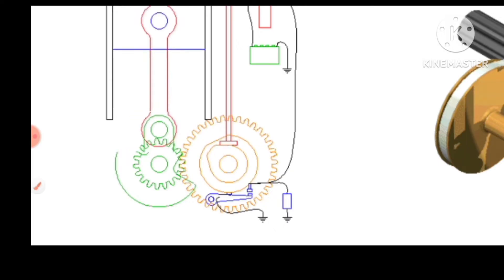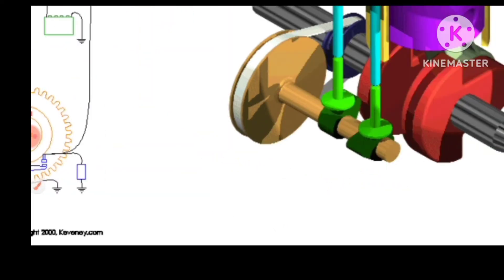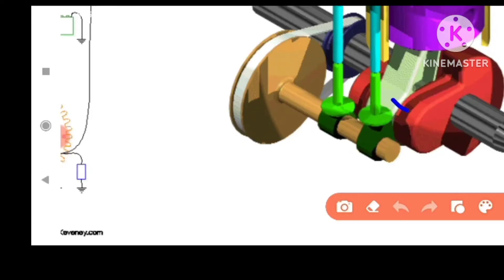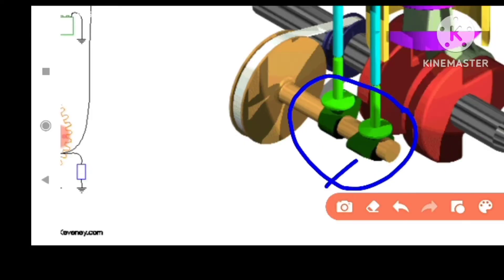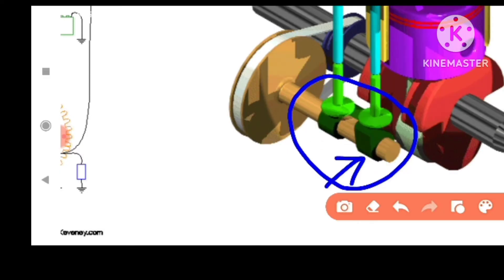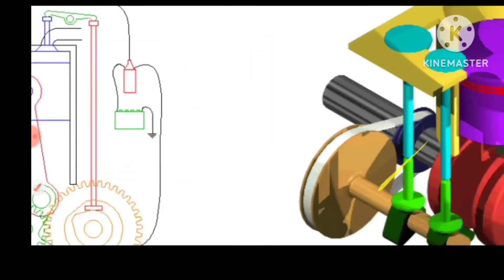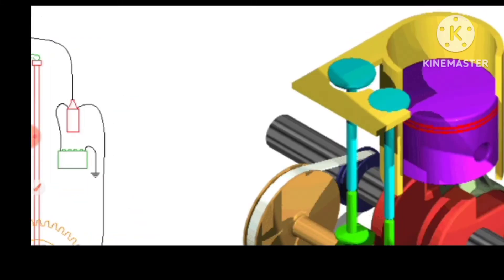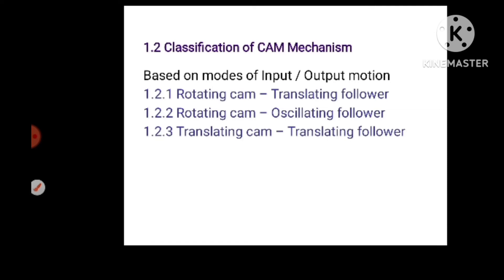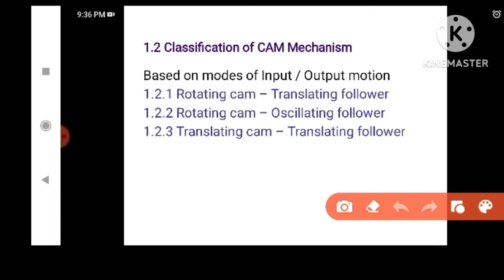Let's look at the examples of the cam types. We can divide the cam: first, rotating cam with translating follower; rotating cam with translating follower; and rotating cam with translating follower.